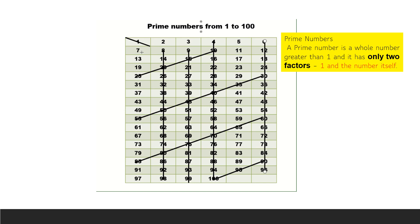Next, check for 7. 7 is a prime number because the factors of 7 are 1 and 7 — only 2 factors. So 7 is a prime number. Leave 7 and cross out the multiples of 7: 14, 21, 28, 35, 42.